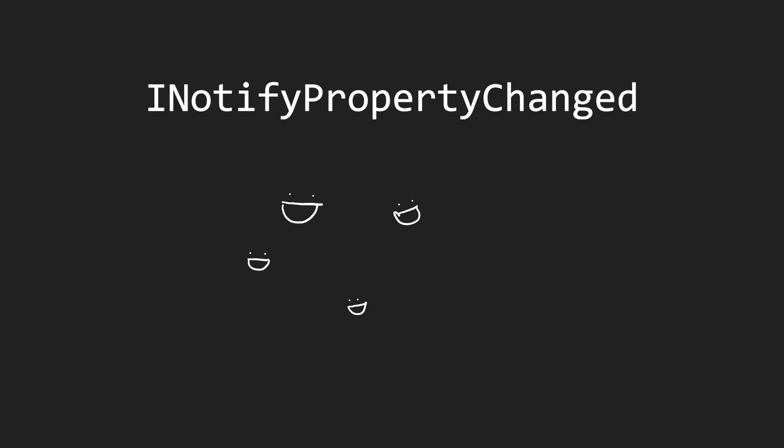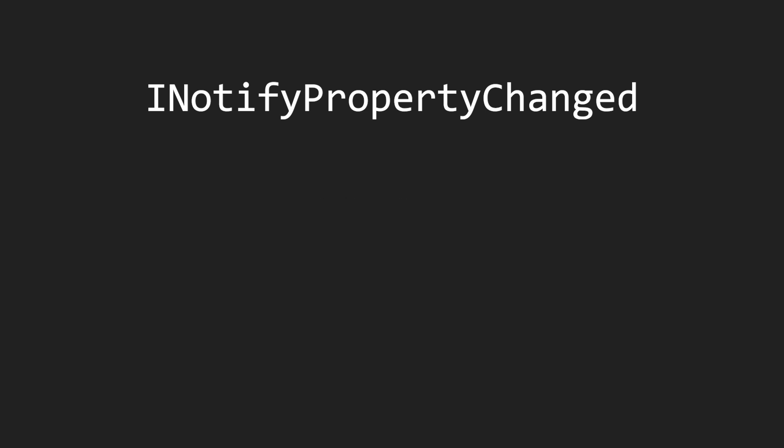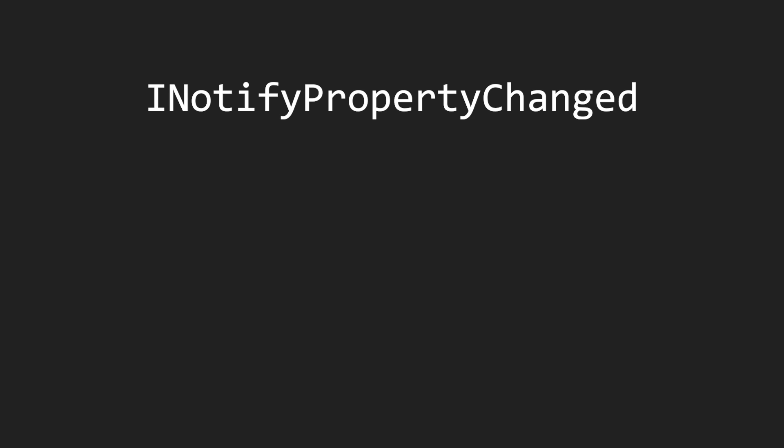It's time to learn what the INotifyPropertyChanged interface is and how to use it. I'll first go over some theory and then we'll work with some code examples. The INotifyPropertyChanged interface is used to notify binding targets that a property value has changed.